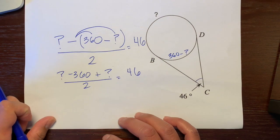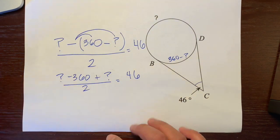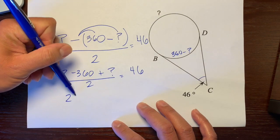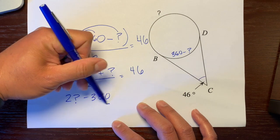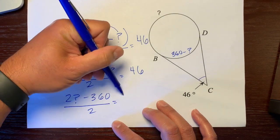We'll bring down this question mark over 2, which equals 46. Let's combine like terms. We have question mark plus question mark, which is 2 question marks, minus 360, divided by 2, equals 46.